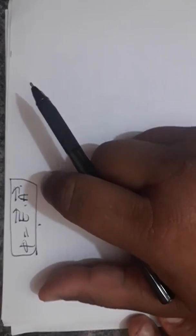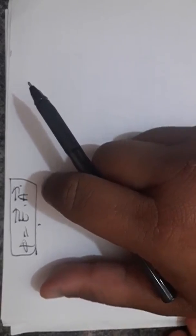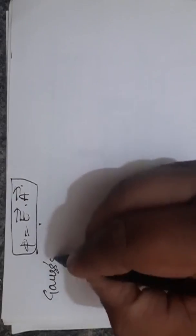To solve our problem, to solve the numerical, another scientist came whose name was Gauss. He gave us a law, Gauss's law.